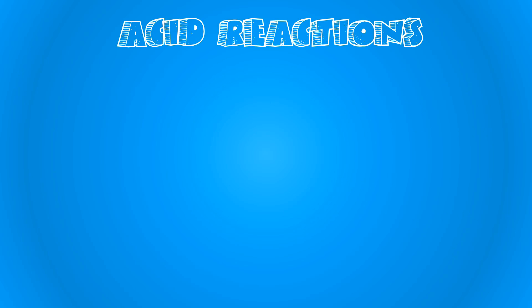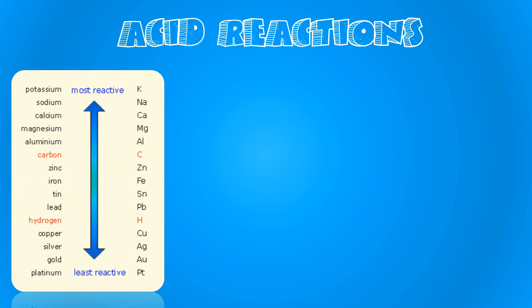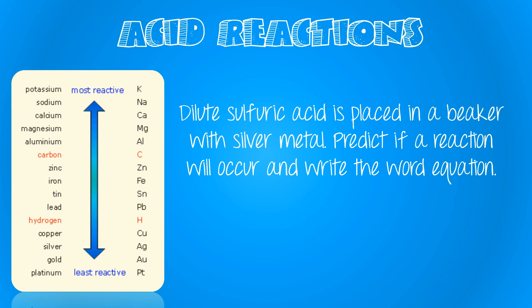Let's have a look at another example. In this case we have sulfuric acid reacting with silver metal — pause the video and predict if a reaction will occur. Hopefully what you saw is that silver is below hydrogen in the reactivity series, which means that no reaction will occur.